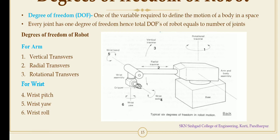Rotational traverse is the rotation of the arm about the vertical axis. It covers the angular position, the total angular position of the robot arm about the vertical axis. So these are the three degrees of freedom for the arm.